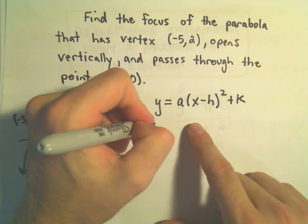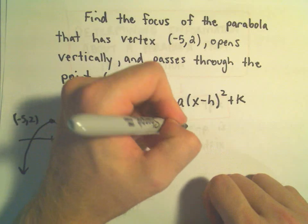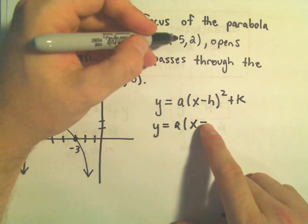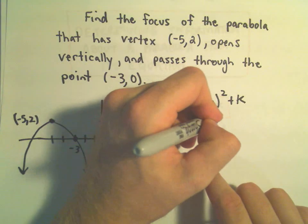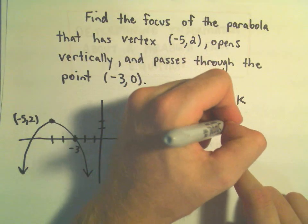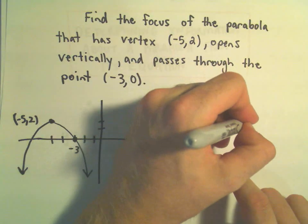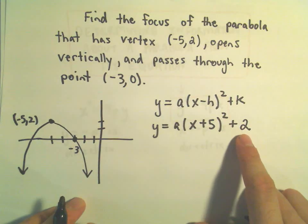They give us the vertex, so we can plug that in. We would have x minus negative 5, or (x + 5) squared. And then the y value of the vertex is positive 2, so that's what we'll drop in there.